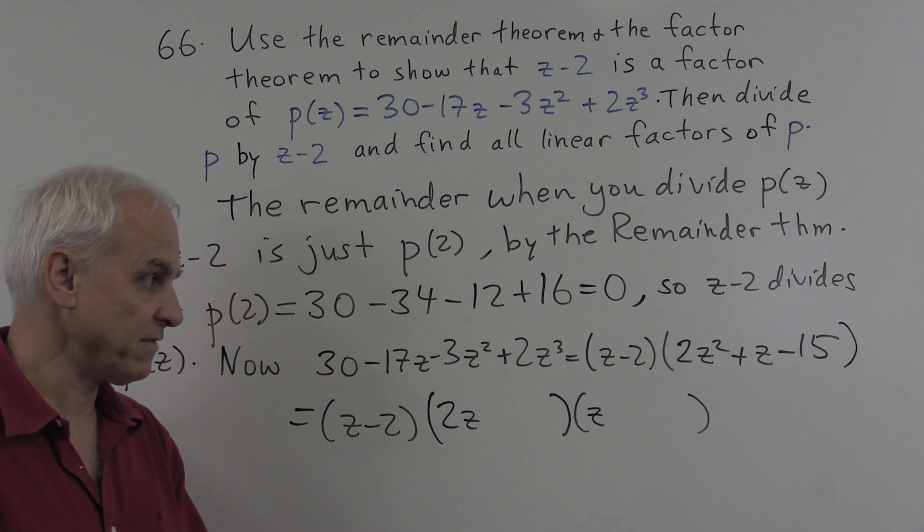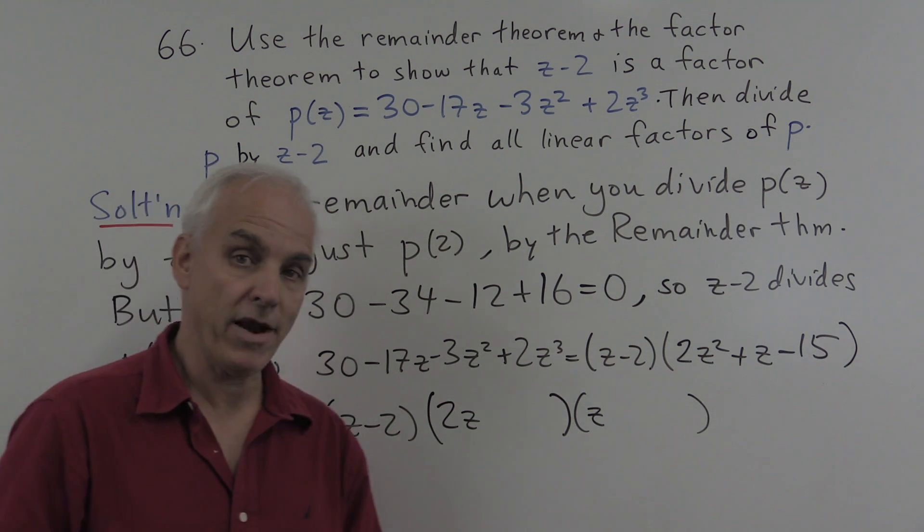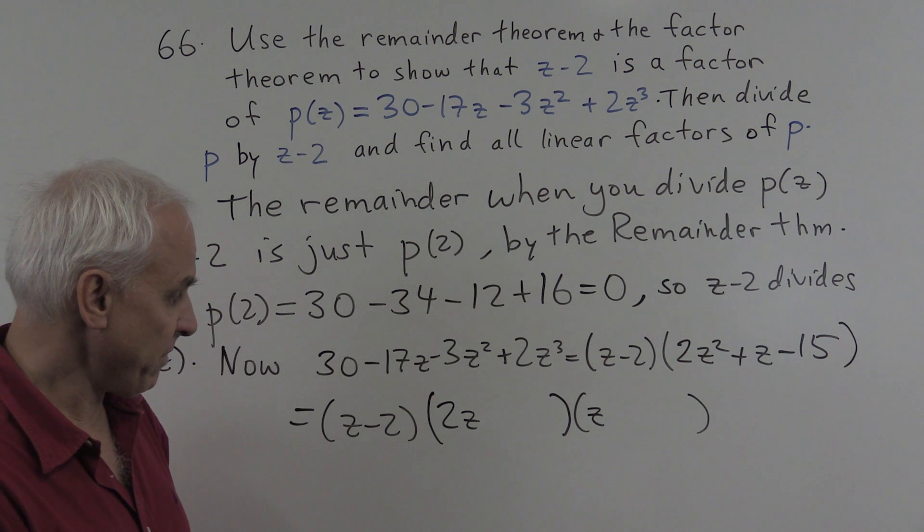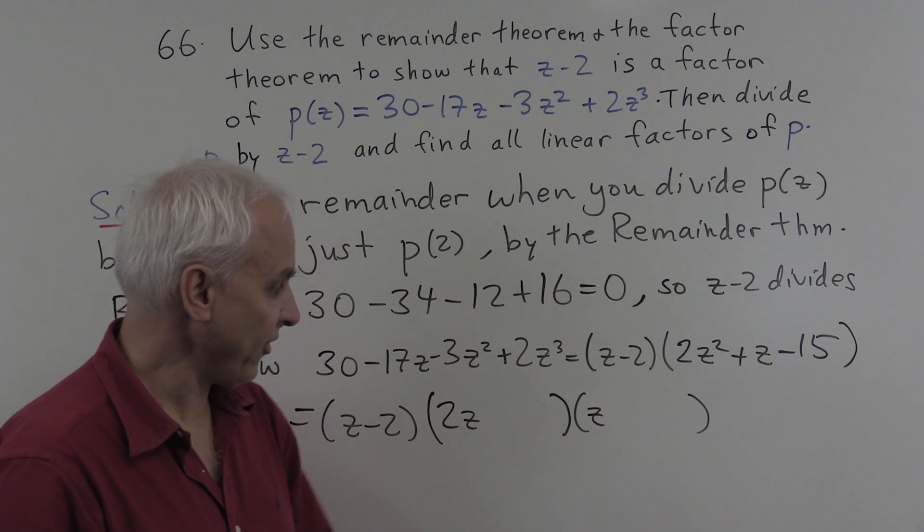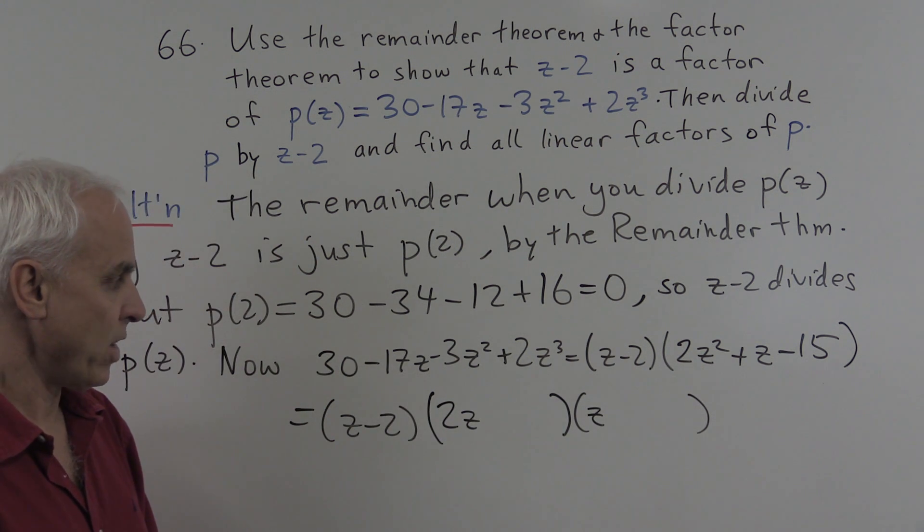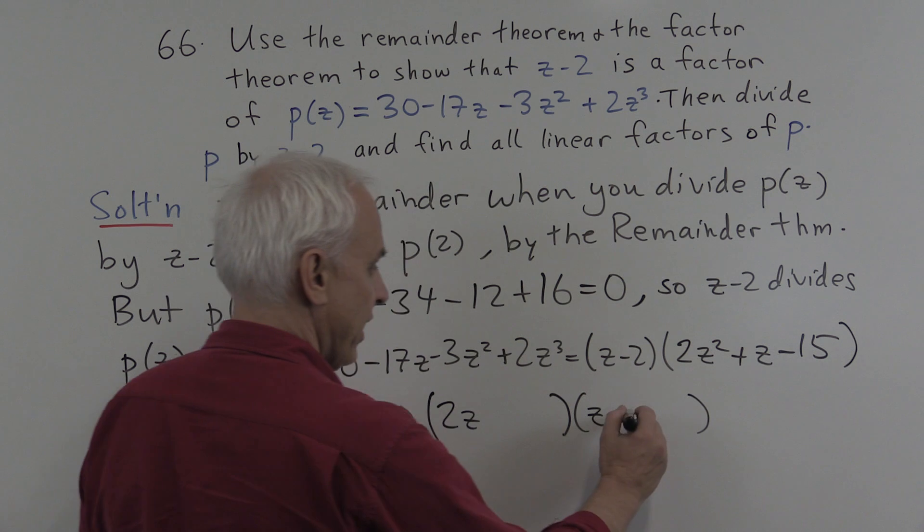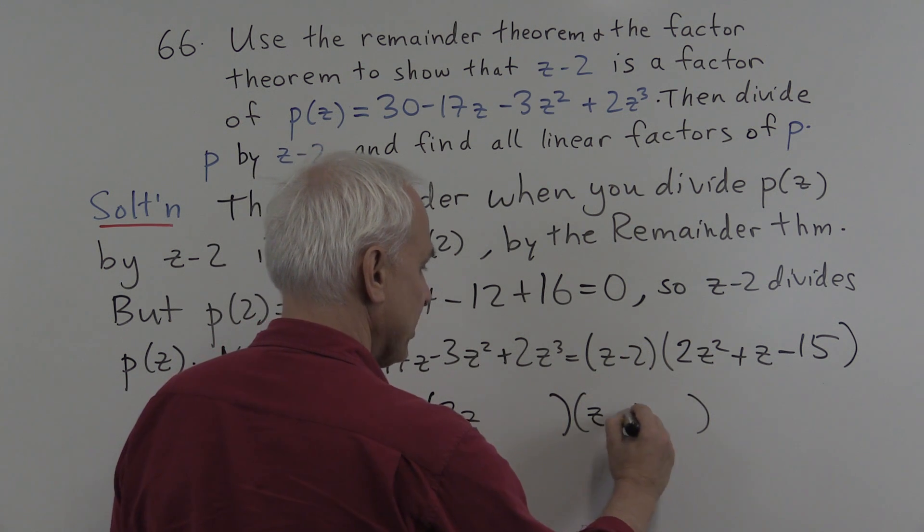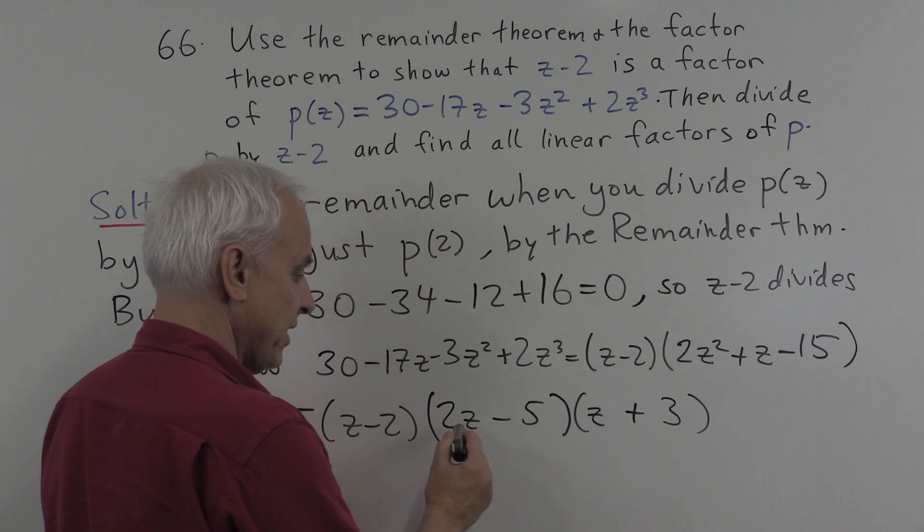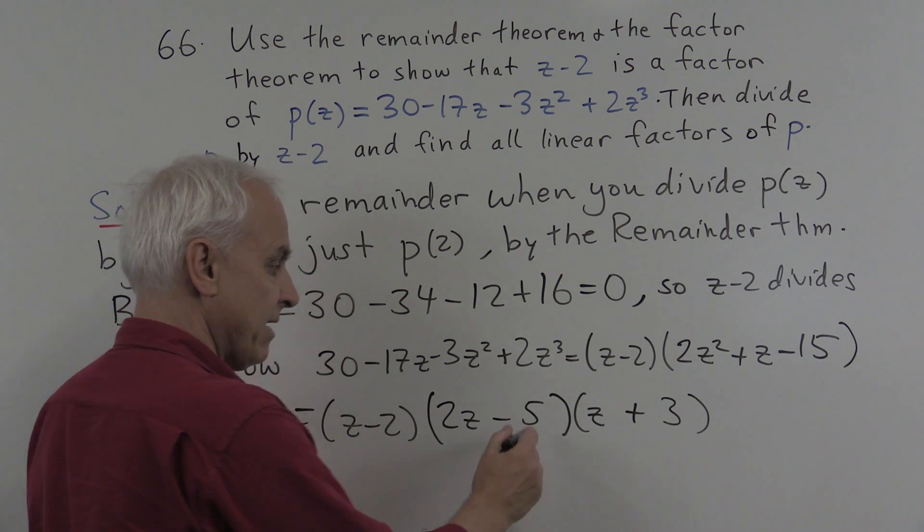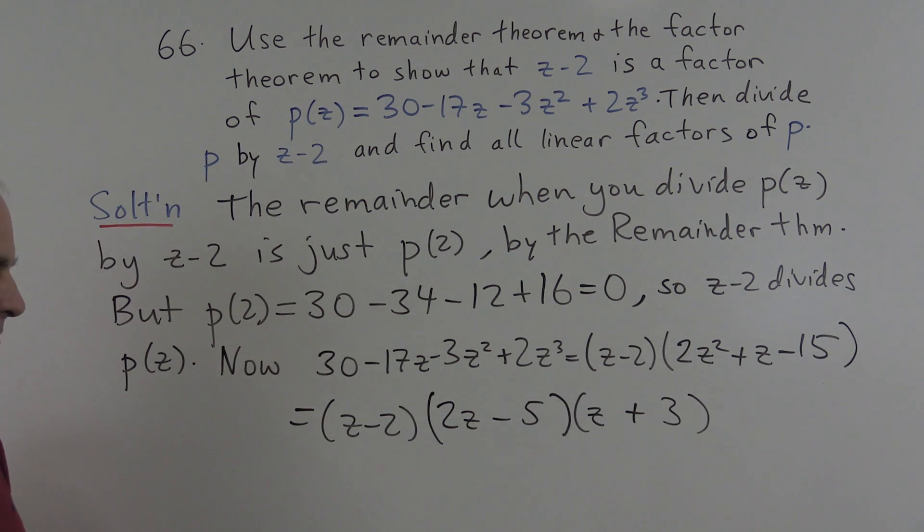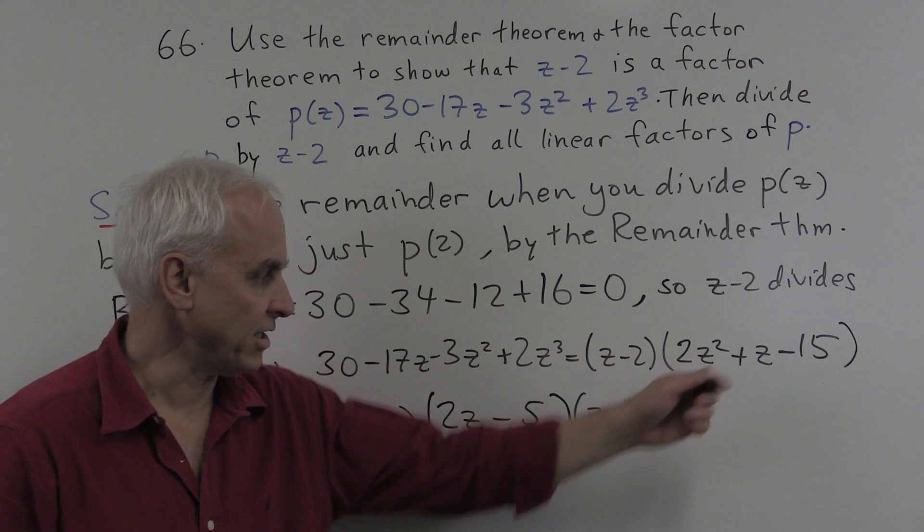So those are various possibilities. And we want this times this, plus this times this to equal 1. So I think we want to have a plus 3 here, and a minus 5 here. That'll guarantee that the 2z times 3 is 6z minus 5z really is plus z. And minus 5 times 3 is minus 15.